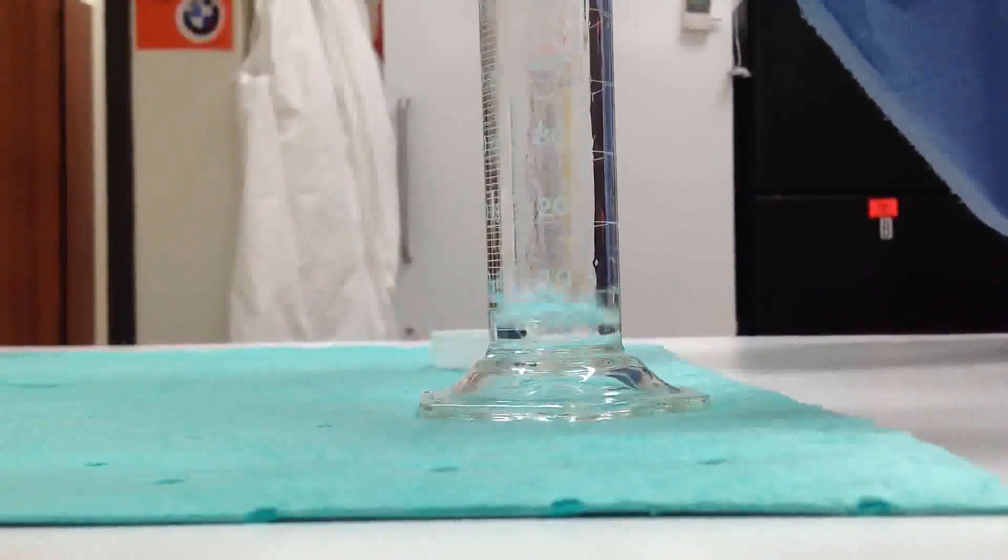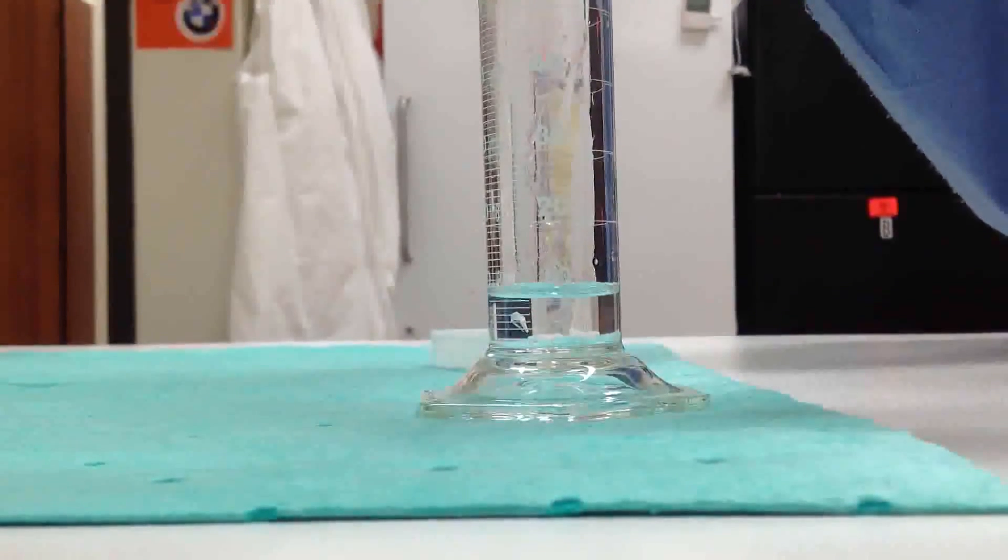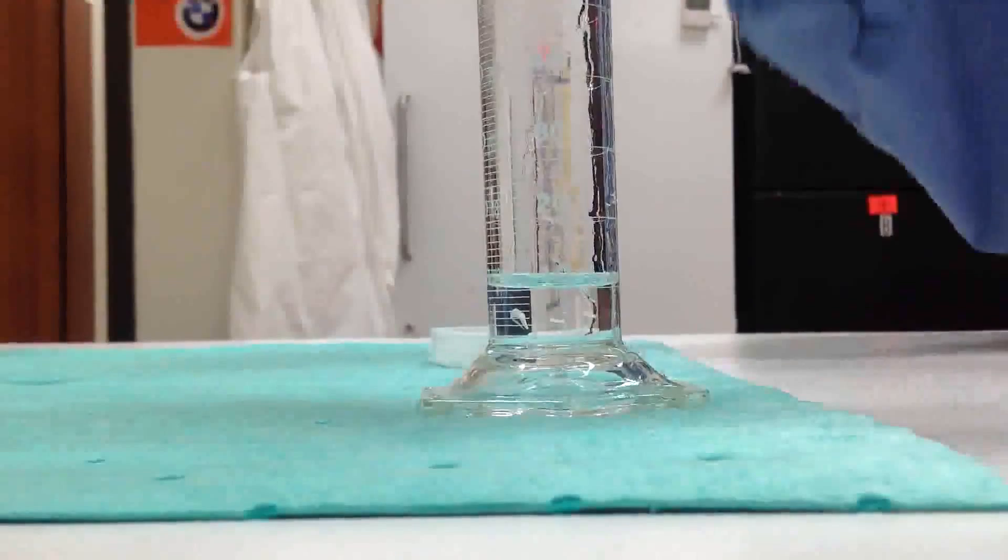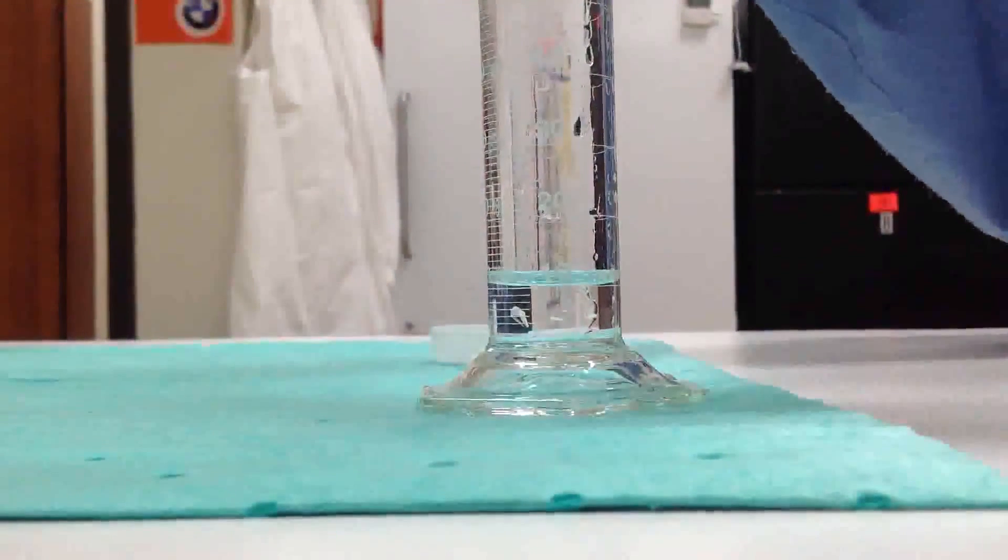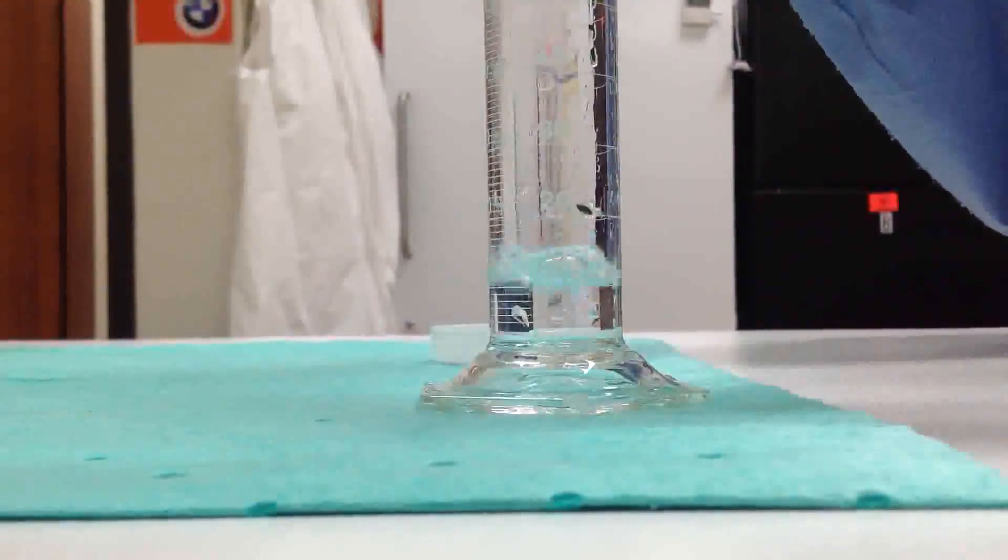Then we'll use a transfer pipette to top it off until we have a good meniscus reading. And remember, the meniscus is the bottom of the arch.